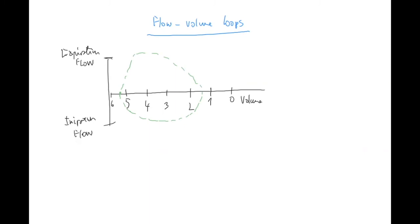With obstructive disease, the residual volume is increased - you might have over two liters trapped in your lungs that you can't get rid of. When you inhale it's similar, and you can have an increased total volume, but when you blow out it's going to be slower - you won't reach the flow speeds of the normal curve. The expiration curve is slower and scooped inward.